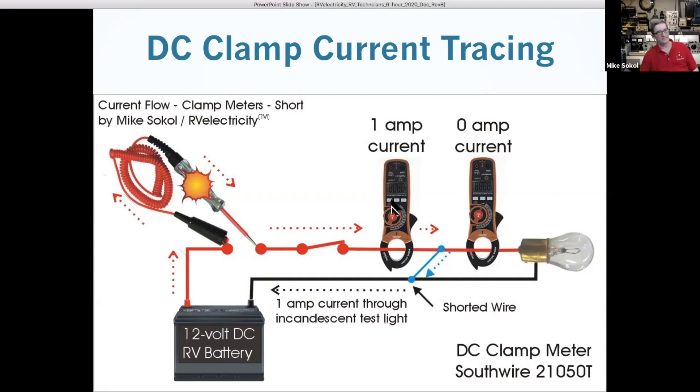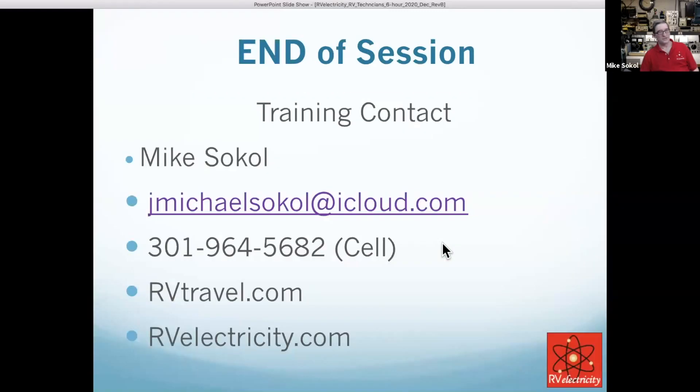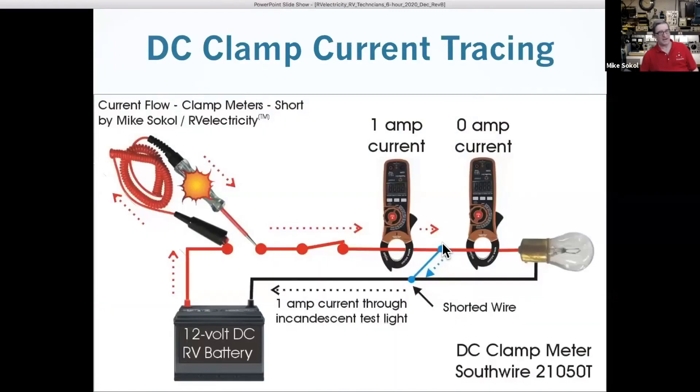You put this in here, turn this on, now you have an ampere or so flowing through here. Take your clamp meter and just start clamping around the wire. You clamp it here and you got an ampere, clamp it here and you got an ampere. When you clamp it over here, there's no current flow, so you know somewhere between here and here is the short. Then you can visually inspect that and start to find where it is.